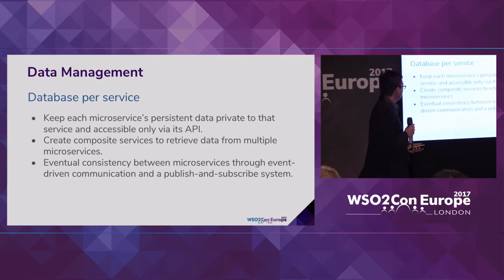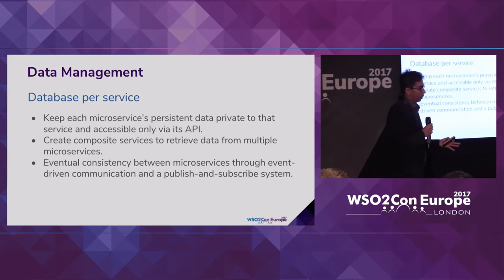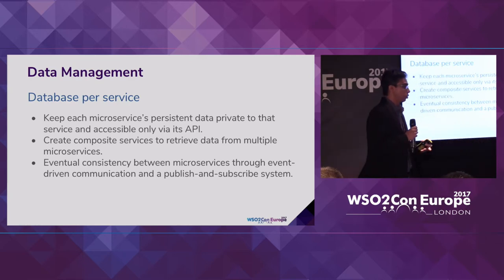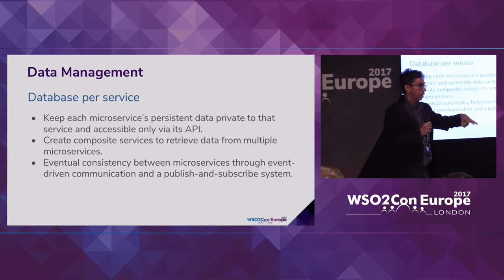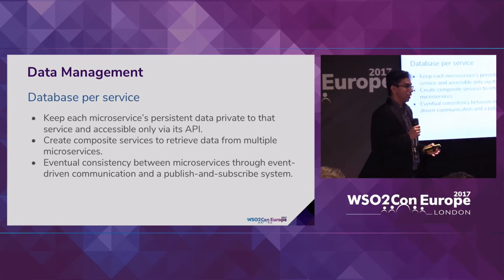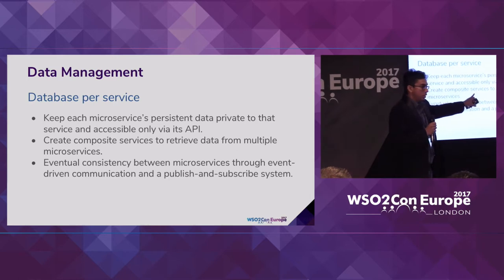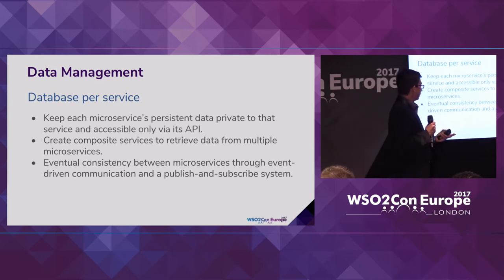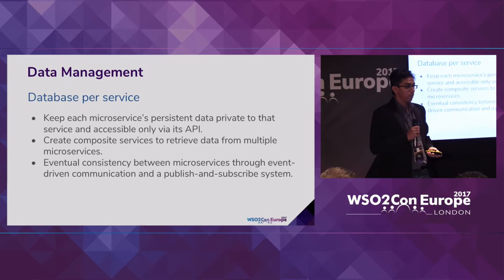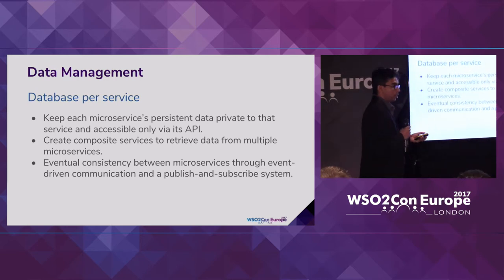On data management: microservices should have their own database, and microservices cannot access another microservice's database directly — access should go through the API. When creating joins, it is recommended to have a composite service that creates the composition rather than doing joins at the database level. Ballerina has its own data integration capabilities, data tables, and SQL-related connectors which make that easier. Between these databases, you can implement eventual consistency using asynchronous communication technologies.